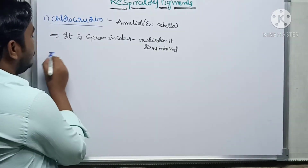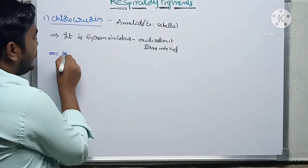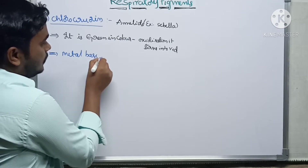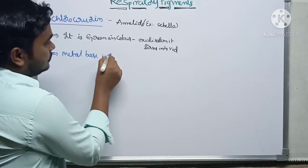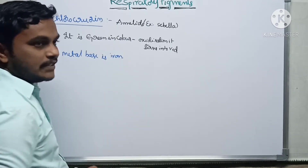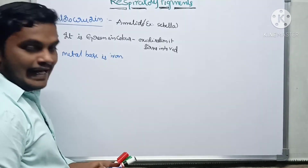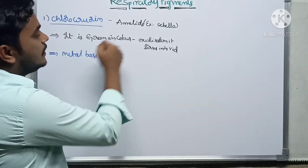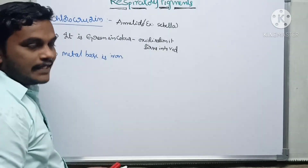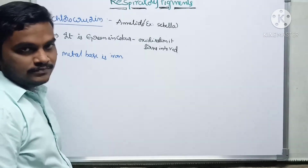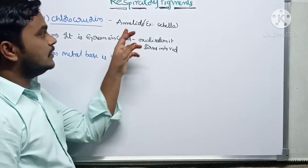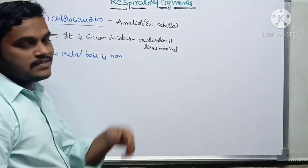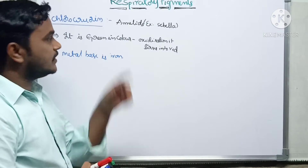The metal base here is iron. So the metal base for chlorocruorin is iron. The example is annelids — in phylum annelids, the organism Sabella has chlorocruorin as its respiratory pigment.